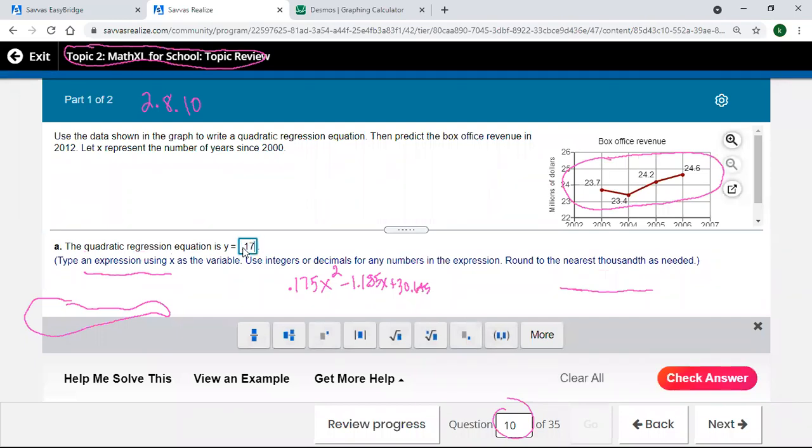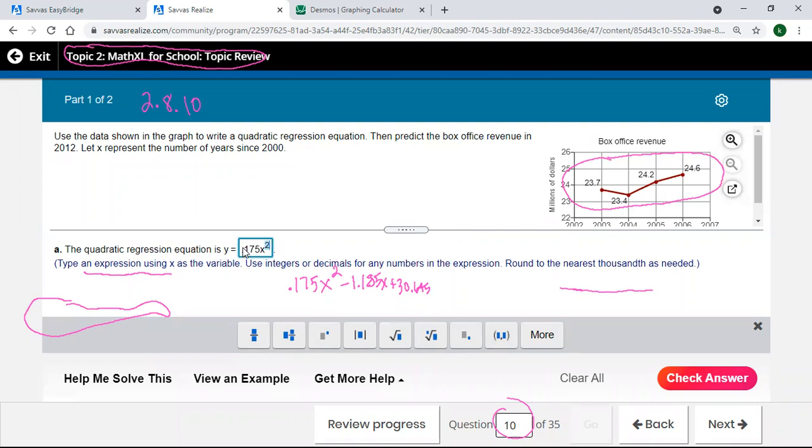We'll just see what Savvas does. If it gets us that close and it takes off points, well, I'll understand if you submit it that way. When we look at it, it's that close. So 0.175 x, shift 6 again to get in the exponent, 2 over to the right, minus 1.1875 x plus 30.645.